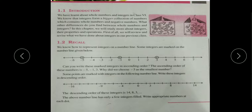We know how to present integers on the number line. You can see this number line, friends. Some integers are marked on the number line given below. Here, minus 5, minus 1 and 3 are marked. We have to write this in ascending order.